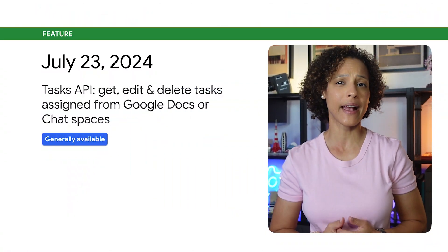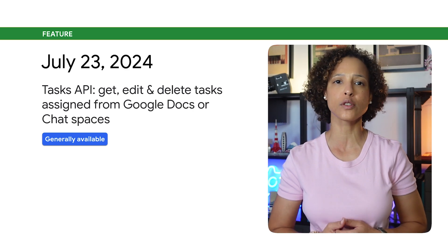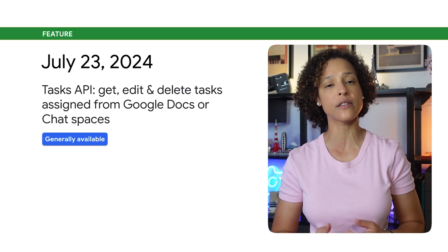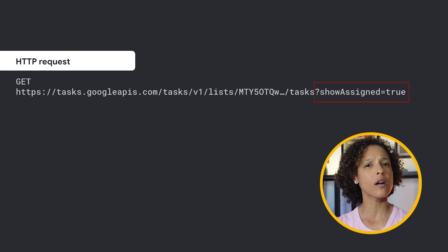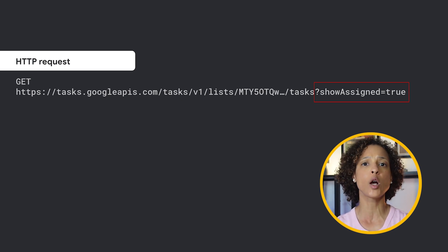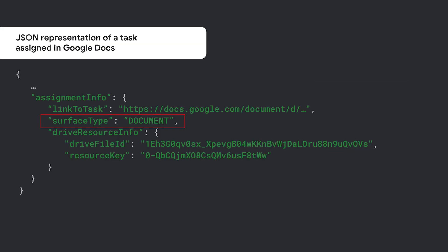You can now get, edit, and delete tasks assigned from Google Docs documents or Chat spaces using the Tasks API. When listing all tasks, you will have to add the query parameter ShowAsSigned with the value of true to include the assigned tasks. The task resource returned by the list method will contain an assignment_info field which identifies where the task was assigned from.